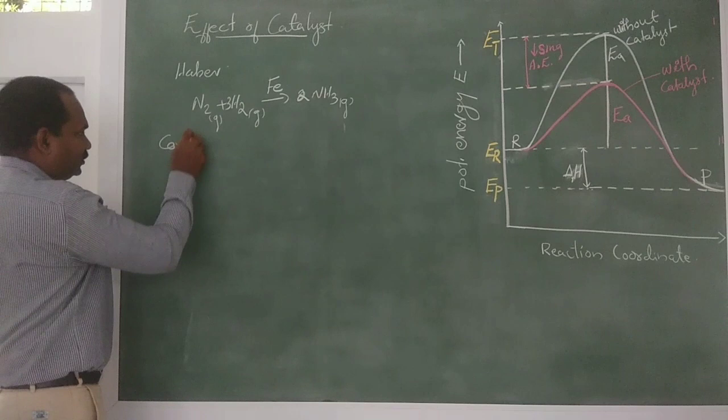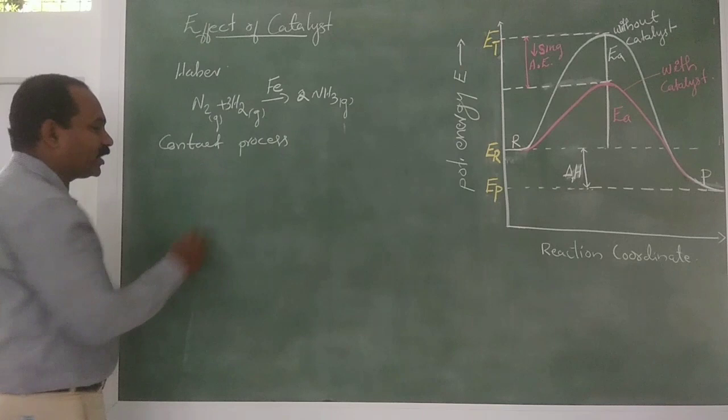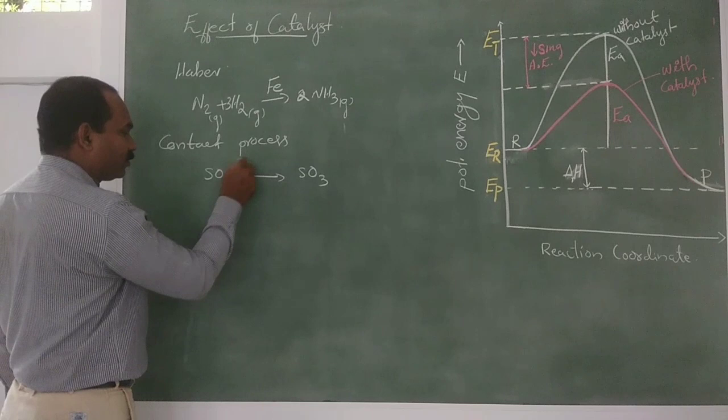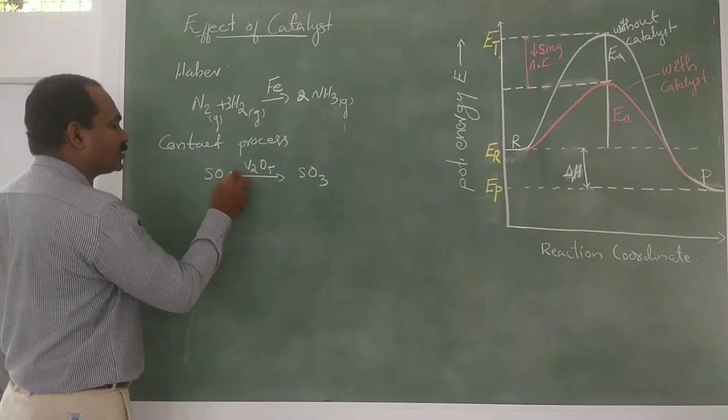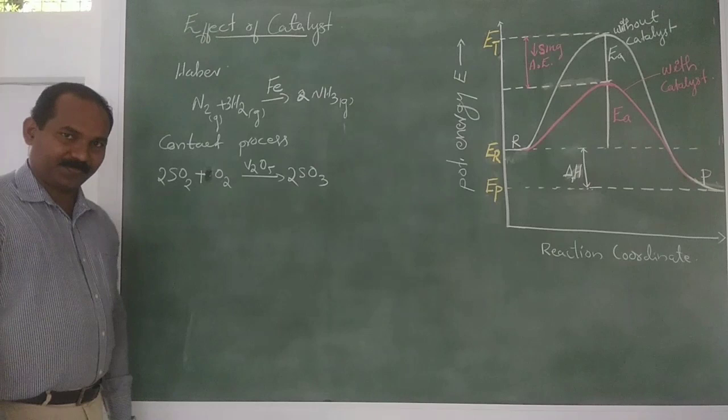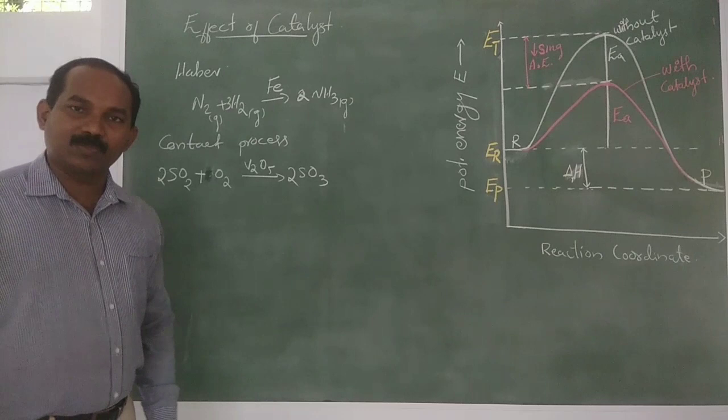In the Contact process — the preparation of sulfuric acid — sulfur dioxide is converted into sulfur trioxide in the presence of vanadium pentoxide, V2O5. The reaction is: 2SO2 plus O2 gives 2SO3. In the Contact process, vanadium pentoxide is used as a catalyst.